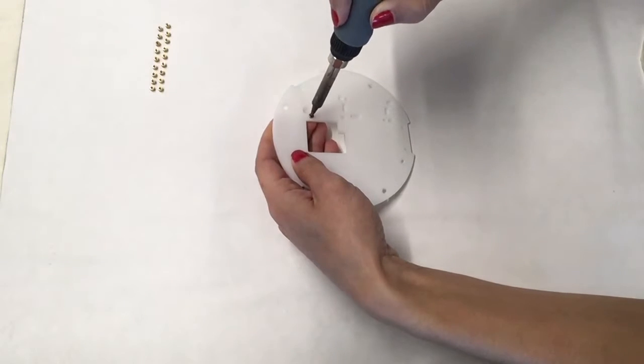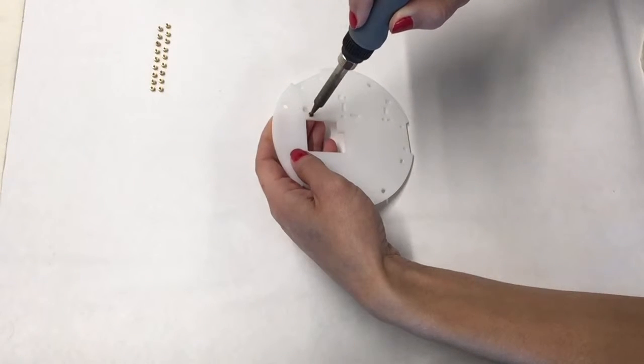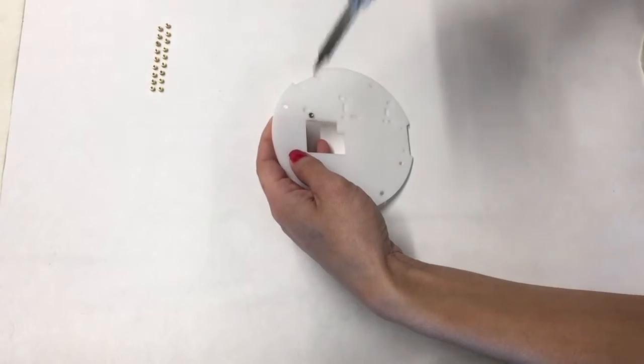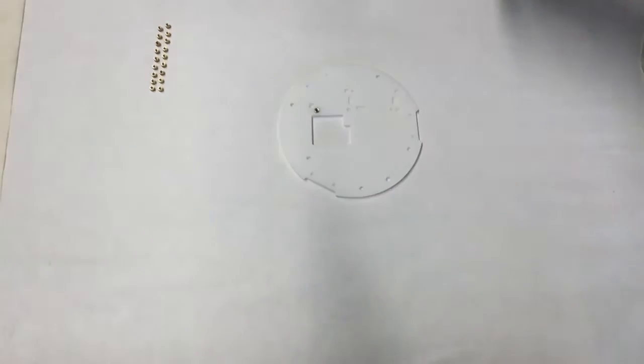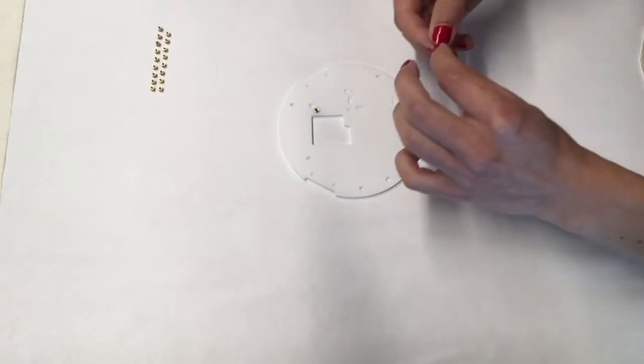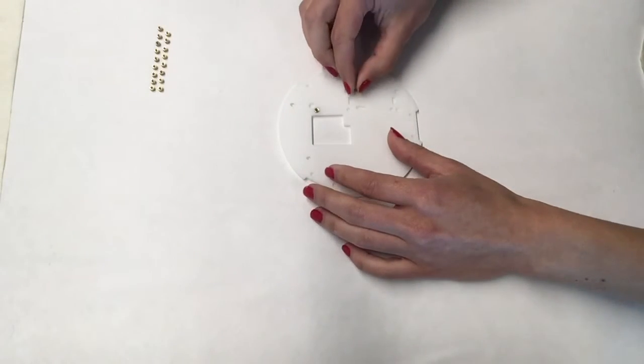You will not need to make pressure with the soldering iron, as the material around it will melt, making space for the insert to go in. If you see that it does not slide easily, try leaving the iron touching the brass insert a little longer.